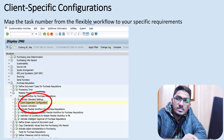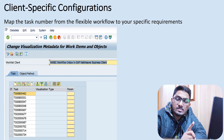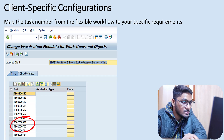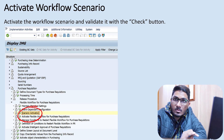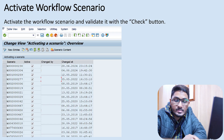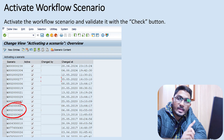In the client-specific configurations step, we need to add the task number which we got in SWDD. We add the same task number in the SW T-code. In this client-dependent configuration, we just maintain the task number — that's it. The next step is activating the workflow scenario. Whether it's a requisition, contract, or purchase order, go to that specific activate scenario path, add the workflow number, then click 'Active'.